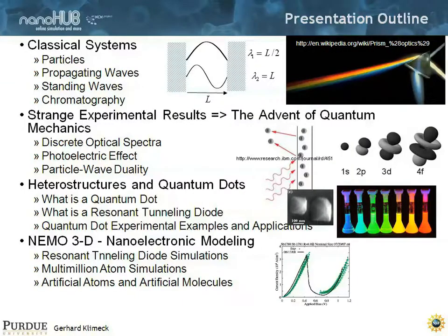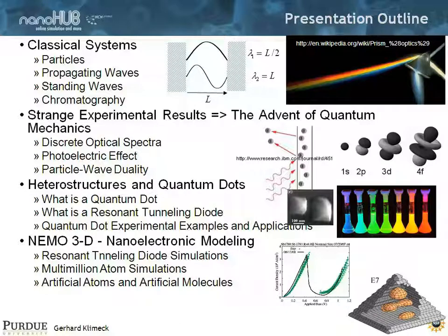That brings us to the conclusion of this lecture, where we've covered classical systems, experimental results, heterostructures and quantum dots, and some of the modeling that follows subsequently. I'd like to take any questions. Hopefully it was not too basic, because you all are PhD students, but I wanted to make sure that we start to talk a little bit about the same language on quantum mechanics and what's important.